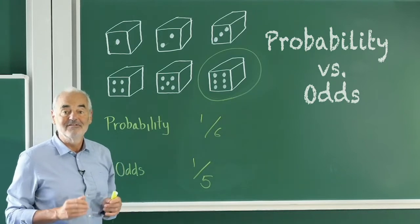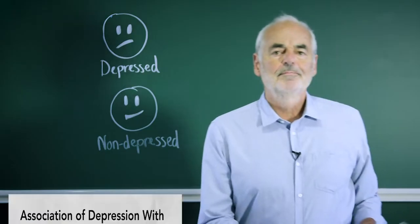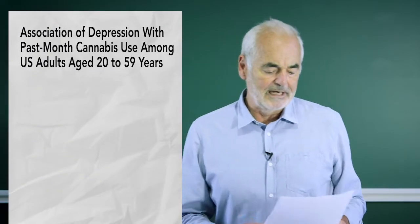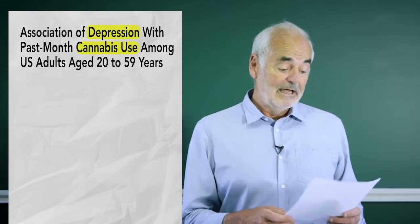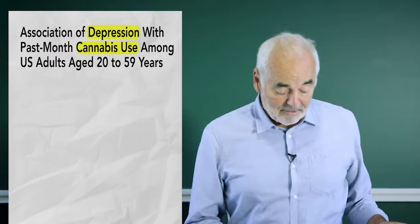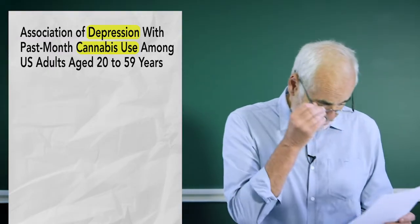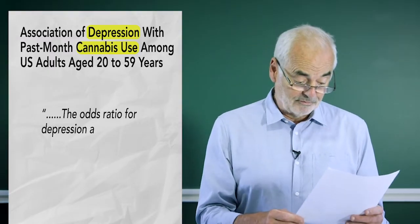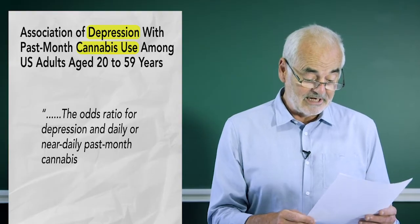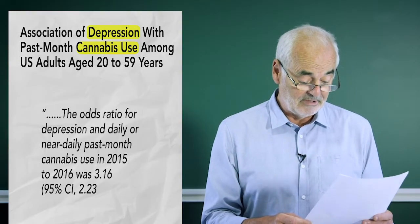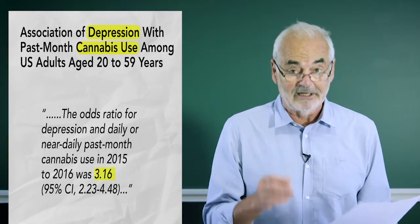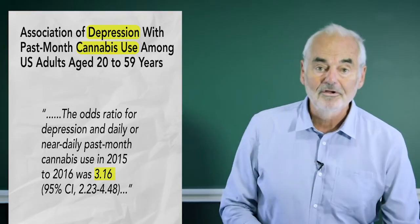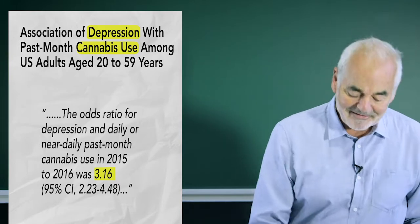An odds ratio is just one odds divided by another odds, but that's actually rather tricky, so I think we need to look at an example. This study was published in 2020 and looked at the link between depression and cannabis use. It's based on a reputable US survey, and one of their findings was that the odds ratio for depression and daily or near-daily past-month cannabis use in 2015 to 2016 was 3.16. What on earth does that mean? Let's look at the data.